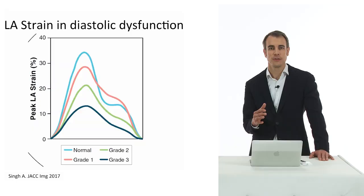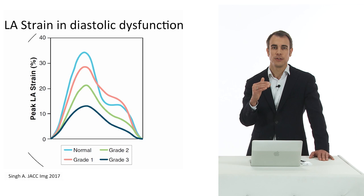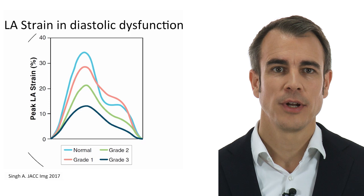This is representative for the different stages of diastolic dysfunction. In this very recent study, the authors found that normal patients have very good LA strain, but according to the degree of diastolic dysfunction, LA strain is diminished. So we can pick up gradual changes in correlation to the degree of diastolic dysfunction.